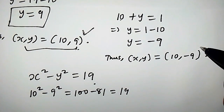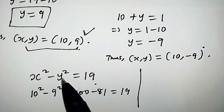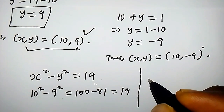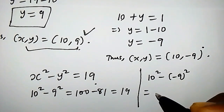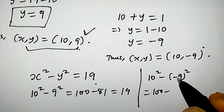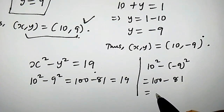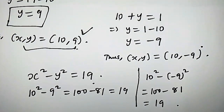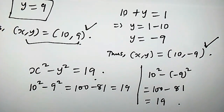Now let's check the second solution. We plug x equals 10 and y equals negative 9 into the equation: 10 squared minus (negative 9) all squared equals 100 minus positive 81, which equals 19. This matches the right hand side, so this second solution is also true. That's it — see you in the next video.